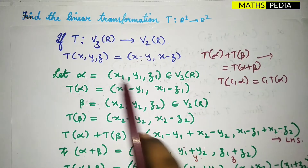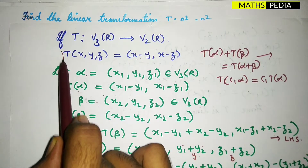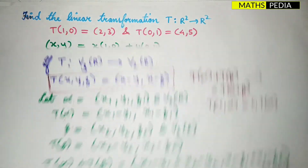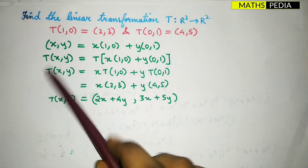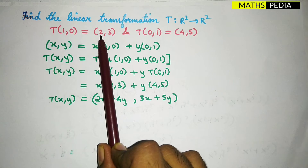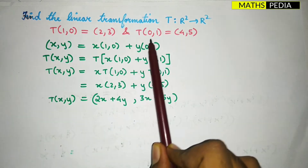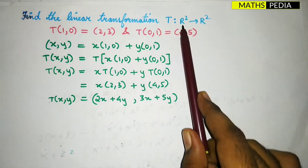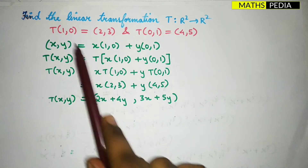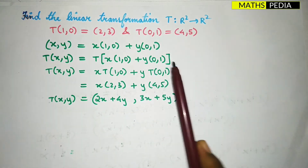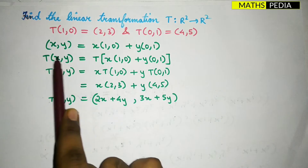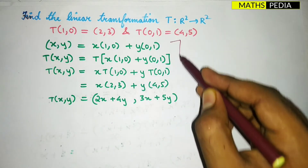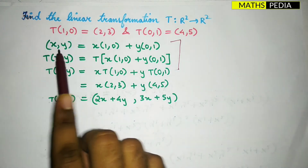We can observe here a previous question we have discussed. In this question we need to find this part. The given information is that T of (1,0) is equal to (2,3) and T of (0,1) is equal to (4,5). The mapping is from R² to R², so two elements are involved. Always remember the final answer will be in the form x comma y.